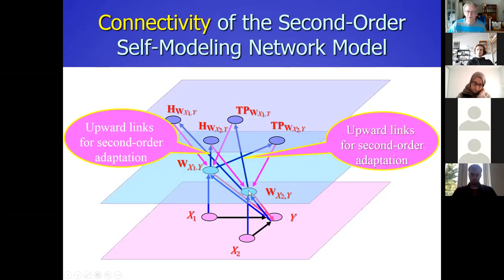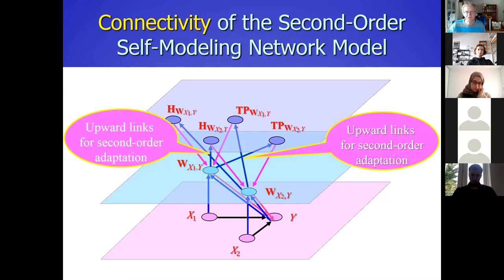These values are used in the calculation, but they should be used in the right place for the right thing, and therefore the role is important — this state has the role of tipping point and this one has the role of speed factor. Therefore it's used in the right place in the calculation. That's the connectivity side of the second-order self-model.